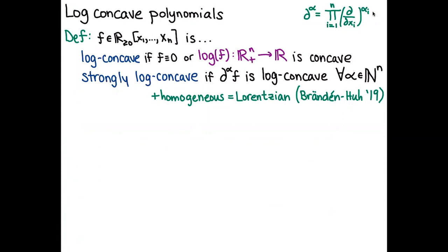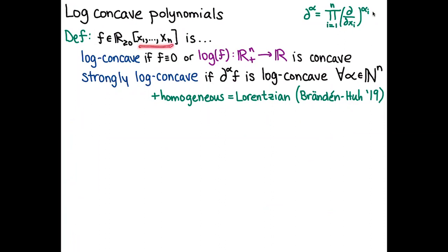There's a very nice relationship between matroids and log-concavity. I'll take a polynomial with non-negative real coefficients in n variables and say it's log-concave if either it's identically zero, or the log of f as a function on the positive orthant is concave — meaning its Hessian is negative semi-definite everywhere on the positive orthant. Since f has non-negative coefficients and is non-zero, it takes positive values everywhere on the positive orthant, so we can take the log, and we want that function to be concave.